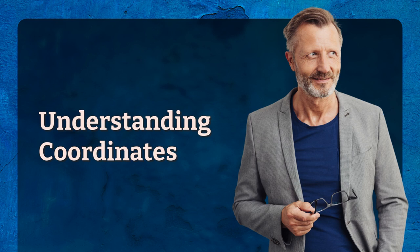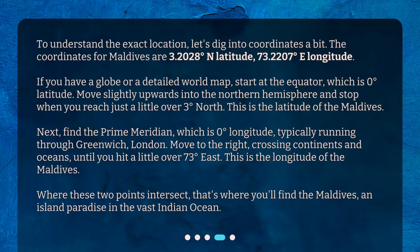Understanding Coordinates. To understand the exact location, let's dig into coordinates a bit. The coordinates for Maldives are 3.2028 degrees north latitude, 73.2207 degrees east longitude. If you have a globe or a detailed world map, start at the equator, which is 0 degrees latitude. Move slightly upwards into the northern hemisphere and stop when you reach just a little over 3 degrees north. This is the latitude of the Maldives.